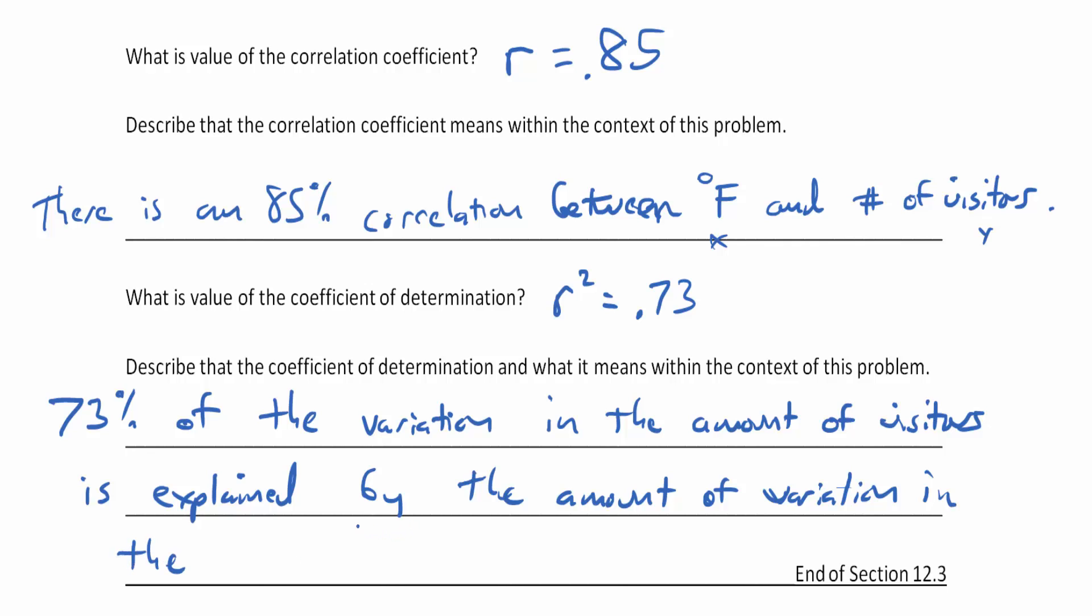Check it out: 73 percent of the variation in the amount of visitors is explained by the amount of variation in the temperature. So it seems like that's a pretty good percentage here, and I would like you in this explanation to take the complement of 73 percent, which is 27 percent, and just say 27 percent is unexplained.